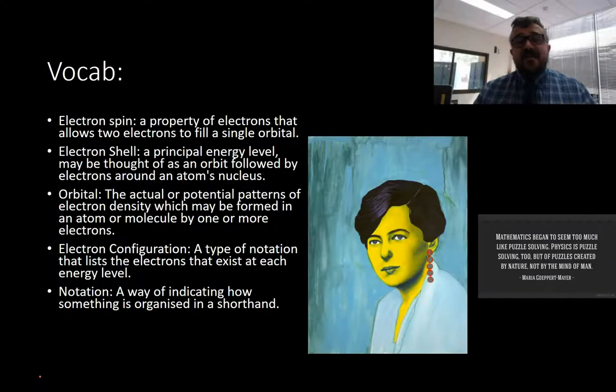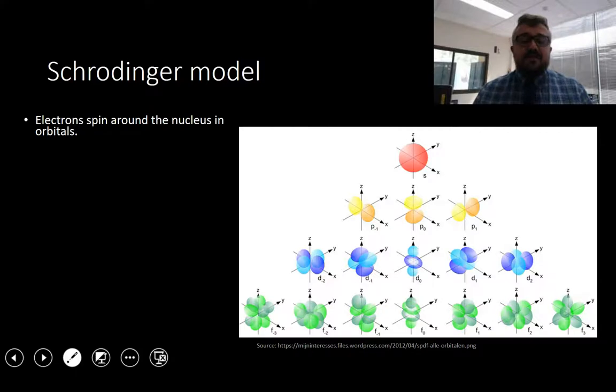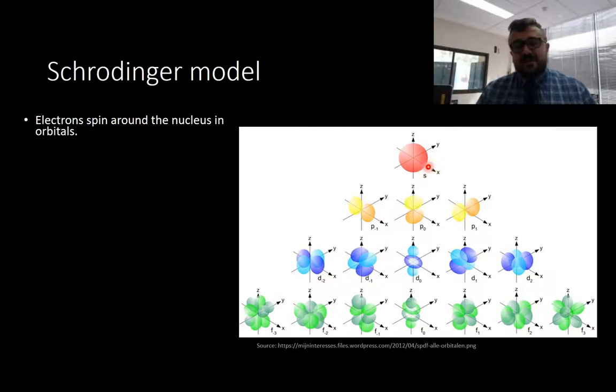This is your vocabulary for the lesson. Pause the video here, write these down, and you'll have something to refer back to. Now, the Schrodinger model of the atom uses SPDF orbitals. Electrons spin around the nucleus in orbitals. For example, the first orbital is the S-orbital, and the electrons spin around the nucleus in a spherical shape.